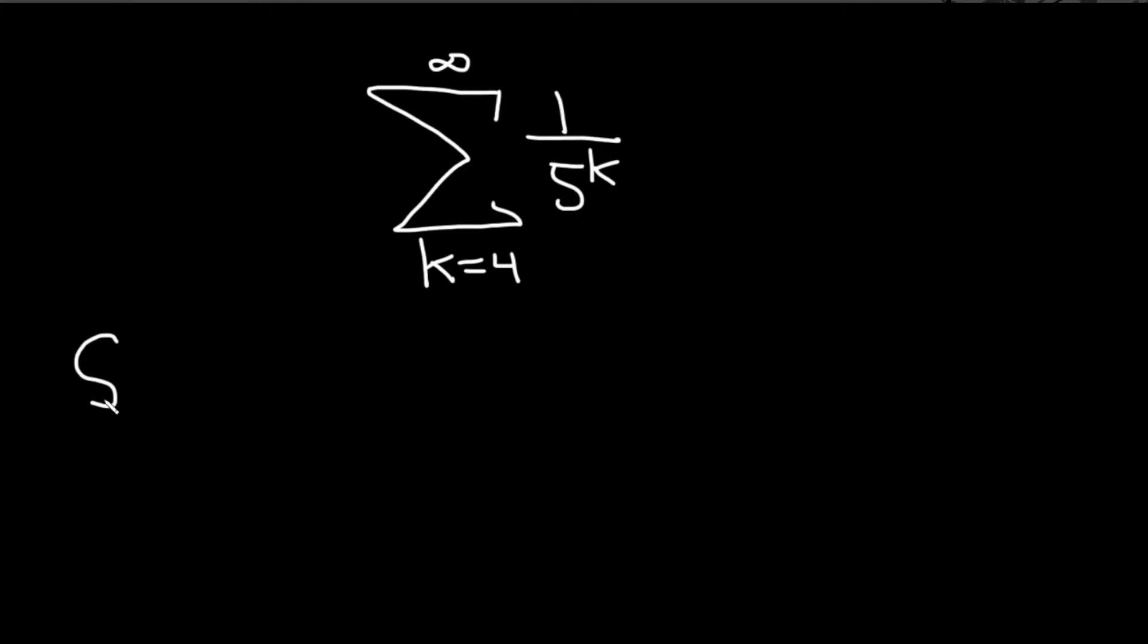Let's go ahead and carefully work through this solution. This is actually a geometric infinite series. We can think of this as 1 to the k over 5 to the k, because 1 to the k is 1.